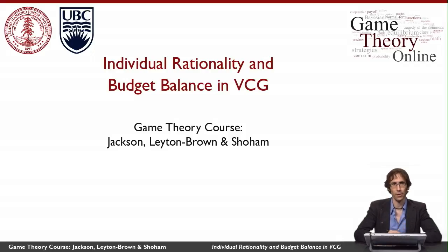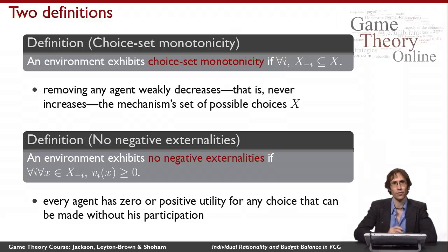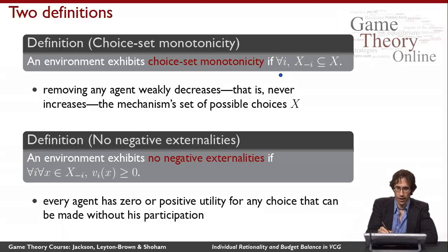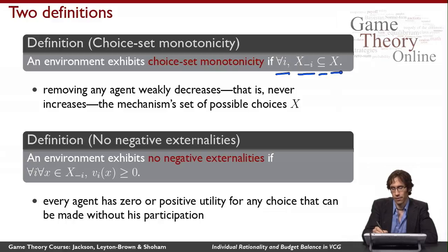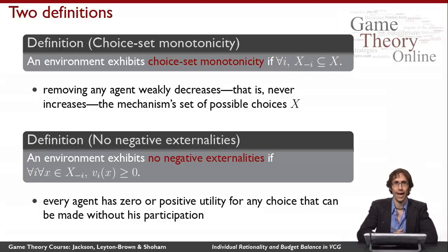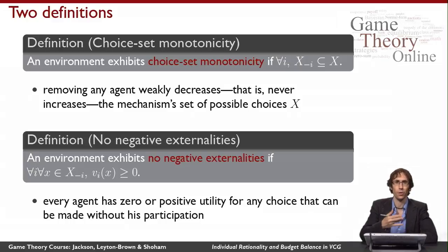What we'll see in this video is that we can have both of these two properties. To get individual rationality I'm going to need two different assumptions to be true of the environment. The first is called choice set monotonicity, and this assumption says that for all agents the set of outcomes achievable without that agent present is a weak subset of the set of outcomes possible when that agent is present. So when I remove an agent from the mechanism, the mechanism's set of available choices weakly goes down — no new choices become possible when somebody gets removed.